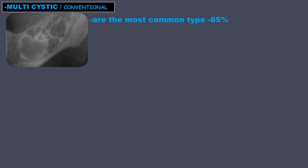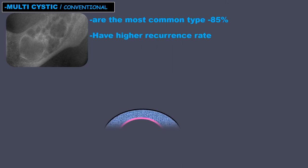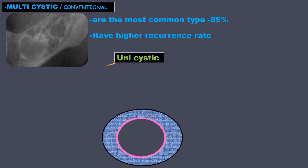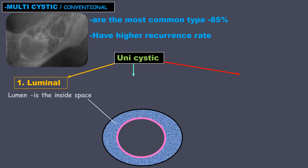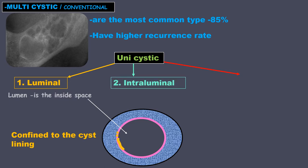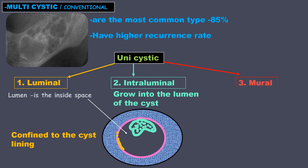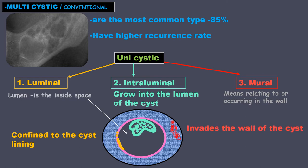Two important facts about the multicystic type: it is the most common type and has the highest recurrence rate. In the unicystic type, there are three subtypes. The luminal type — lumen is the inside space and this lesion is confined to the cyst lining. Intraluminal — these grow into the lumen of the cyst. And mural — meaning occurring in the wall — this type invades the wall of the cyst.